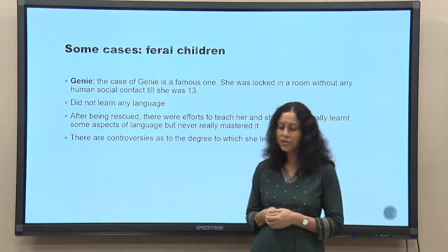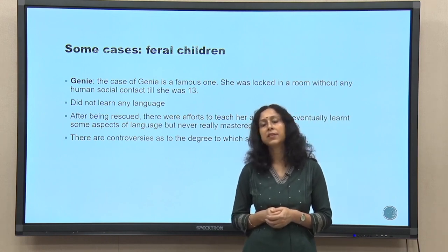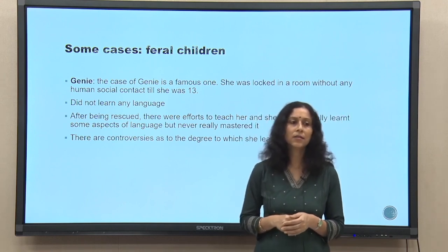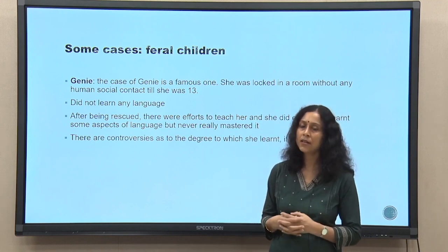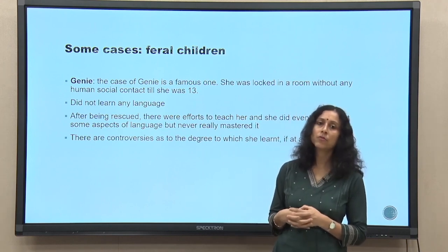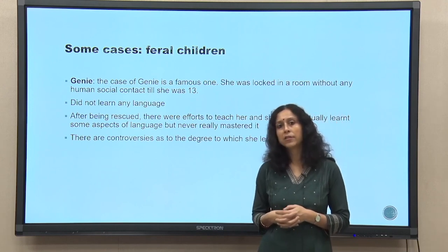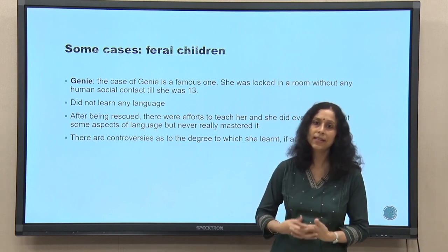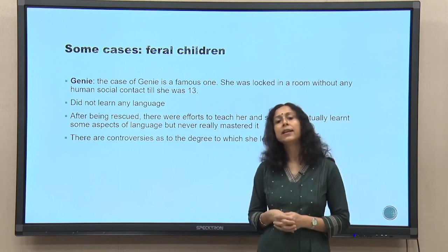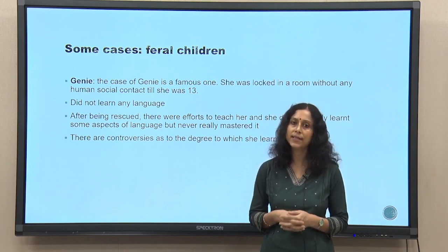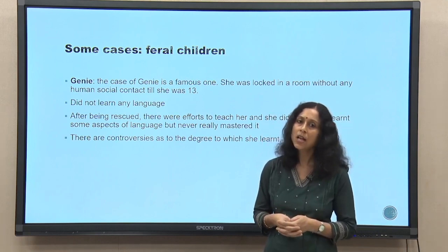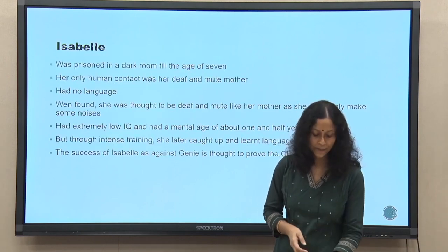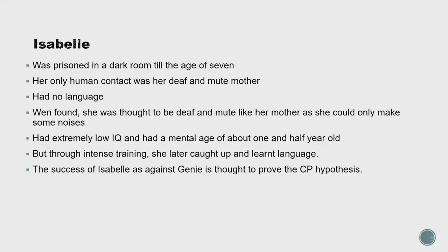Though she eventually learned some aspects of language, she never mastered it. There are lots of controversies with respect to claims about what she learned at all. But all scholars agree that even if she learned a few basics, she was never a proper, fluent speaker of English. She was discovered at age 13. There was another case — Isabel — also with abusive upbringing, kept in a dark room until age 7. Her only human contact was her deaf and mute mother, so she had no language. When she was found she was thought to be deaf and mute like her mother, making only noises with an extremely low IQ.